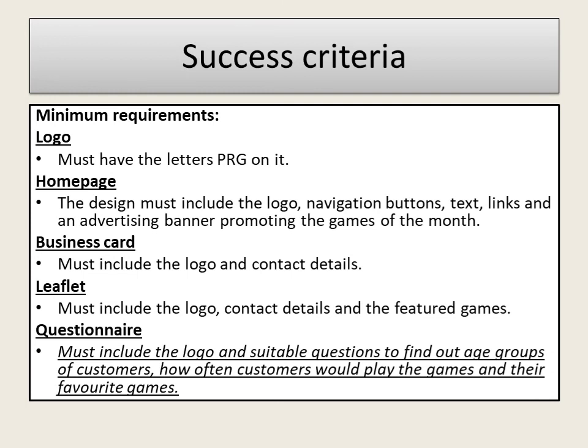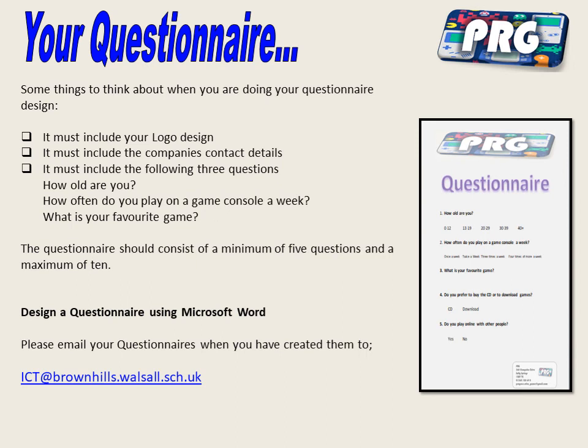Here's the success criteria. You must include the logo that you've designed previously and include suitable questions to find out about the age group of customers, how often customers will play the game, and their favourite games. The questionnaire must include your logo design, the company's contact details, and the following three questions: how old are you, how often do you play on a game console, and what is your favourite game. The questionnaire needs to have five questions altogether — you could add two more questions yourself — or ideally you could go up to ten questions altogether.